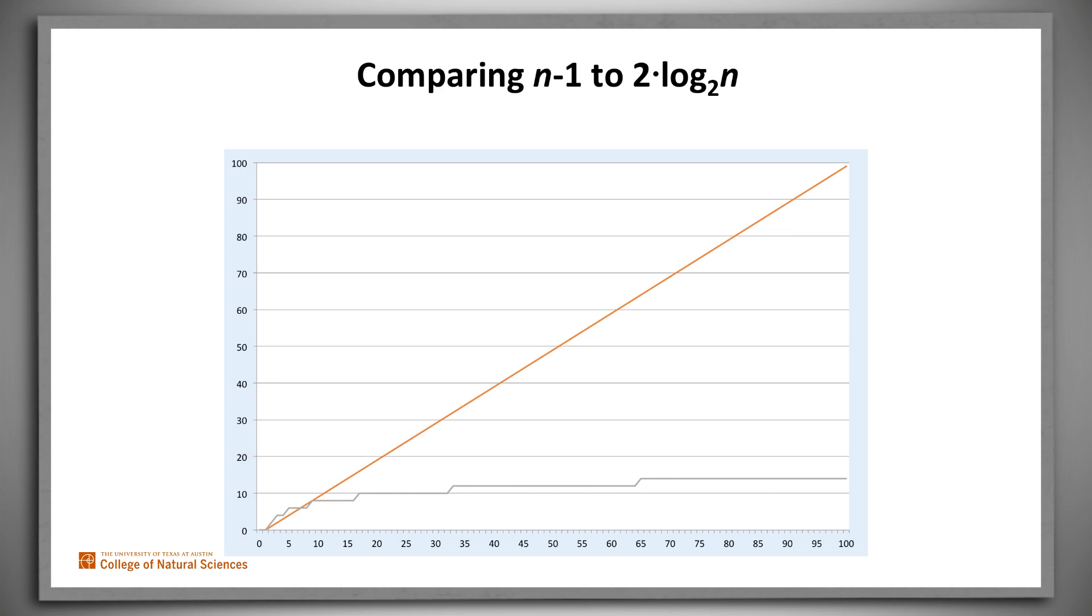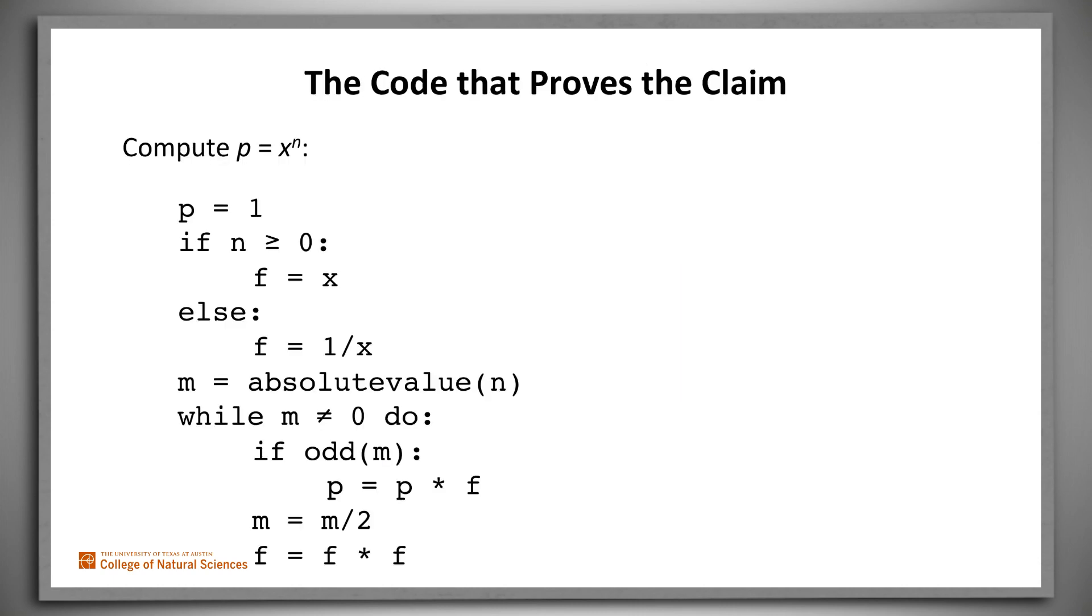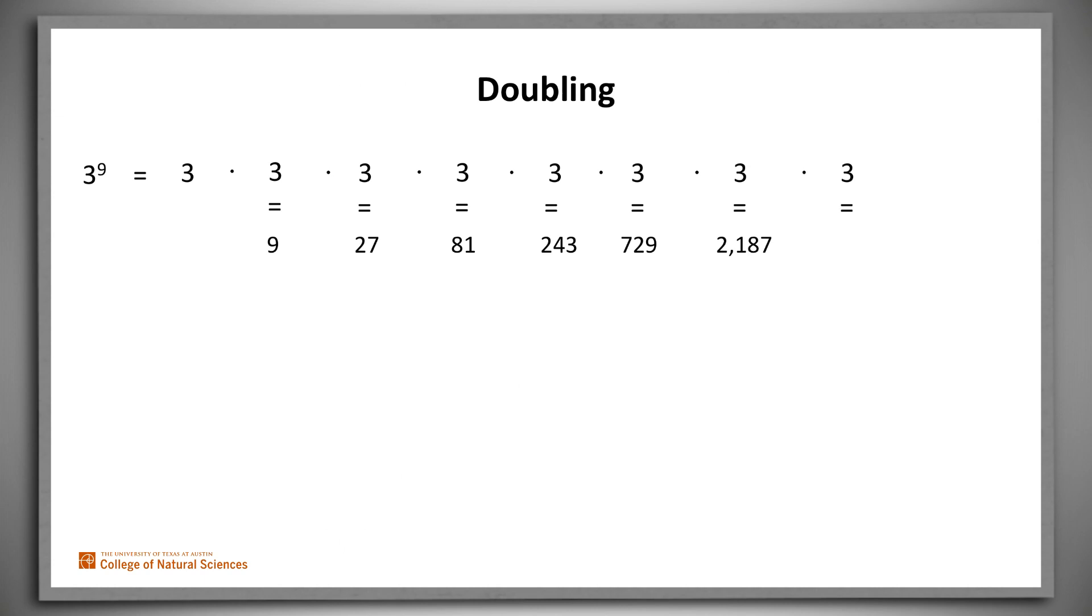Typically, we prove complexity claims like this by a construction. We prove that an algorithm exists by exhibiting it. Here it is. The key idea behind it, and the basis for a proof that it is correct, is this. The straightforward algorithm multiplies by x, in this case 3, at every step. The efficient algorithm doubles the power at every step. So now we multiply by 9. And now we multiply by 81. And so forth, until we don't need to double anymore. Of course, to complete a formal proof of our claim, we must prove the correctness of the algorithm that we've just presented. We won't do that here.